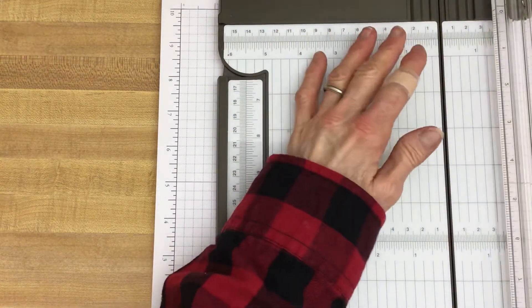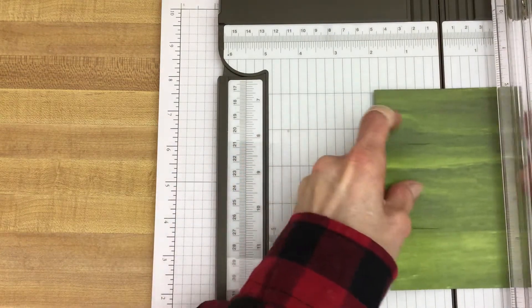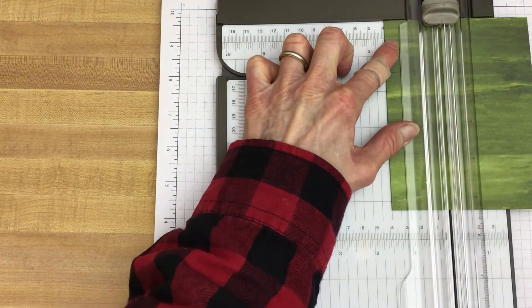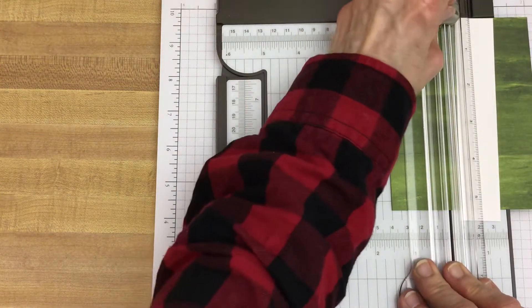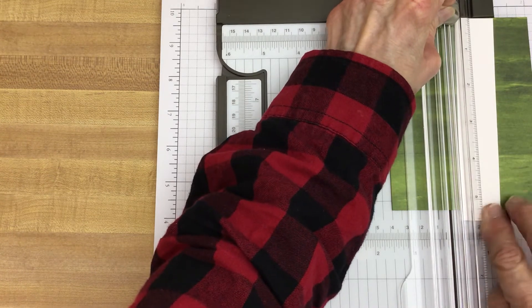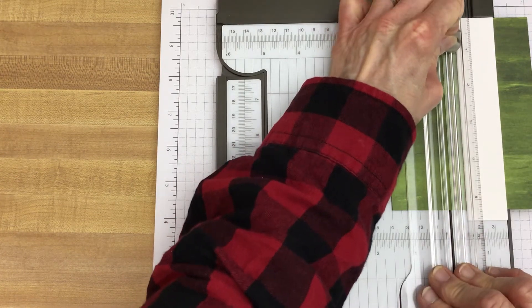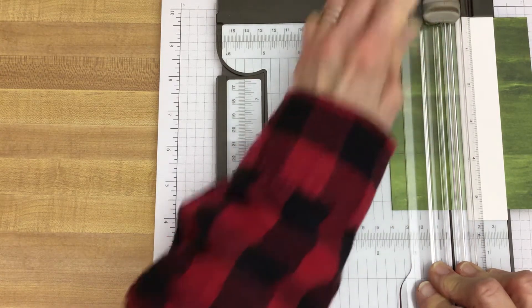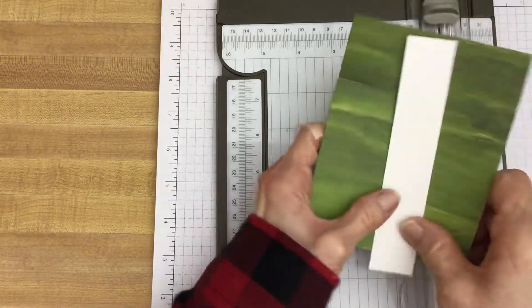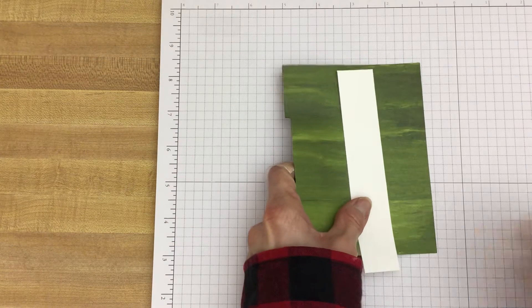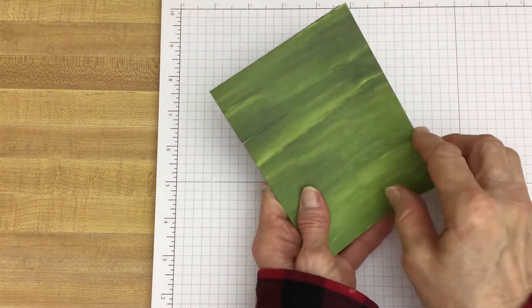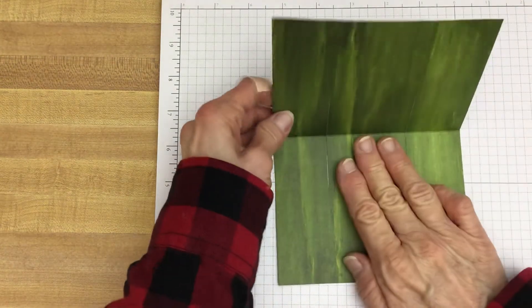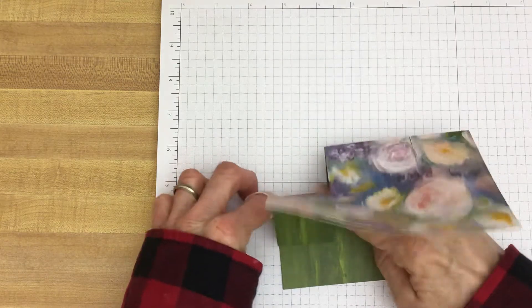Now we'll take this out. And again, just flip it over. Go to the 1 and 1/2 inches. Now open it up. Turn it this way.